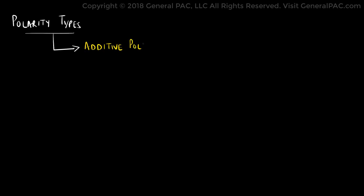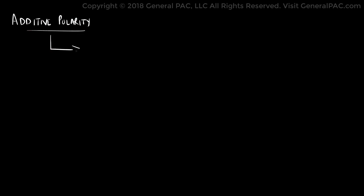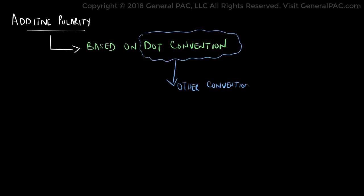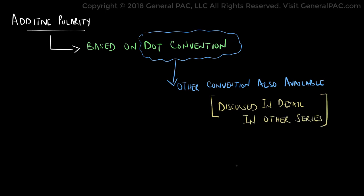There are two types of polarities available. On one hand we have the additive polarity, and on the other hand, we have the subtractive polarity. In order to understand how polarity works, let us first consider the example of the additive polarity. We will be using the dot convention for these examples. Keep in mind that there are other conventions available, which will be discussed in detail in another series.